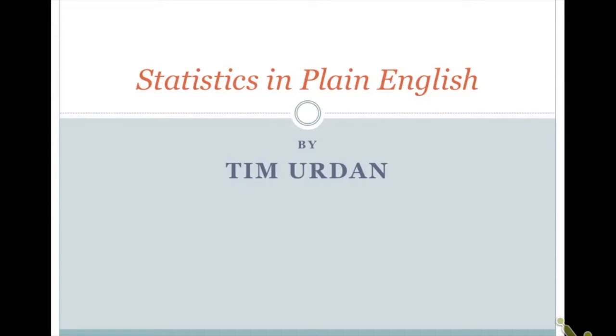Hi, this is Tim Urdin, author of Statistics in Plain English, and in this video I'm going to describe how you calculate a standard error of the mean and then use that to calculate a z-score. And then you can use the z-scores to find probabilities in the normal distribution.